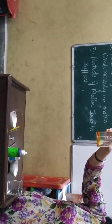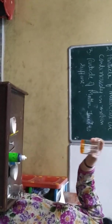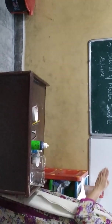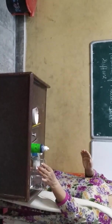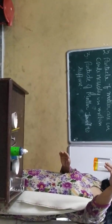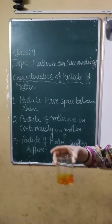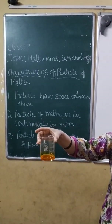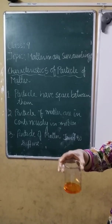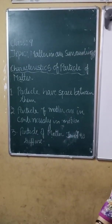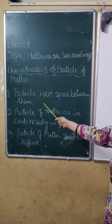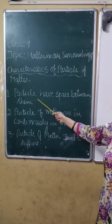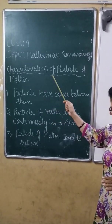Where has it gone? This proves that there must have been space between the particles of the water where the salt has gone. The salt has completely dissolved in the water, proving that there is space between the particles of matter.